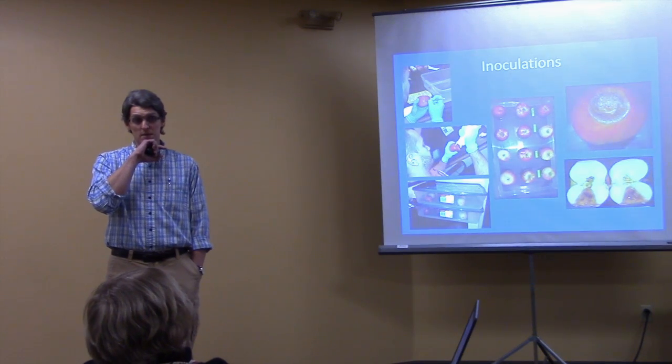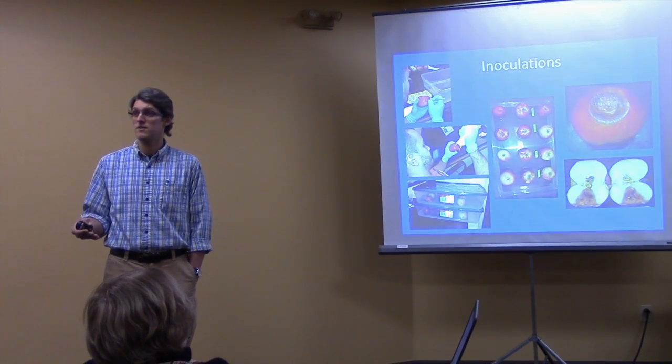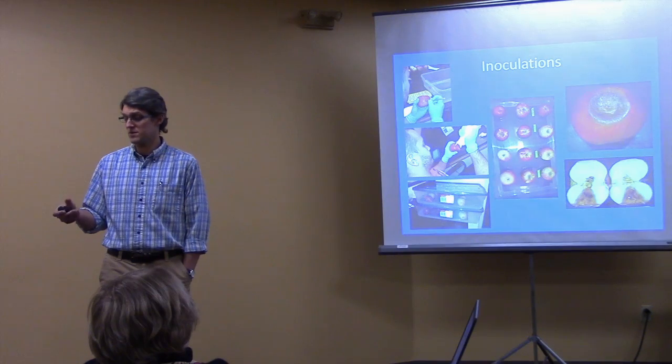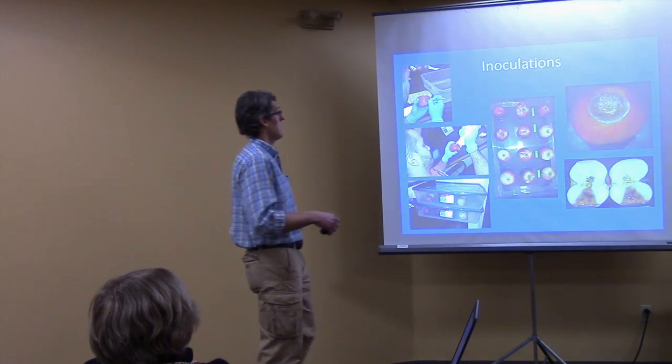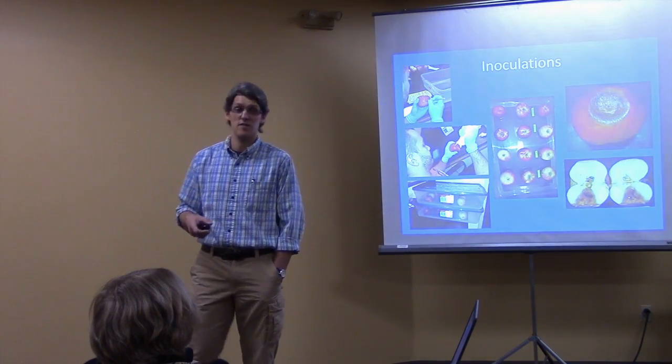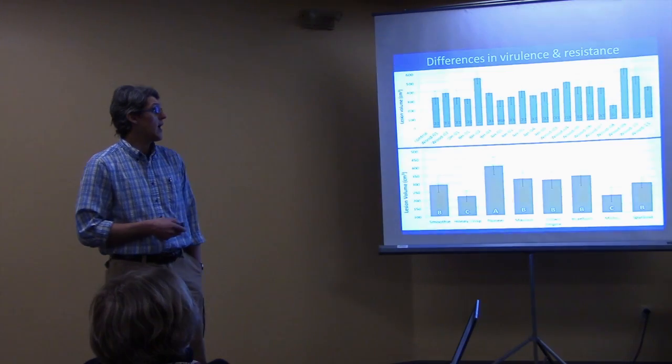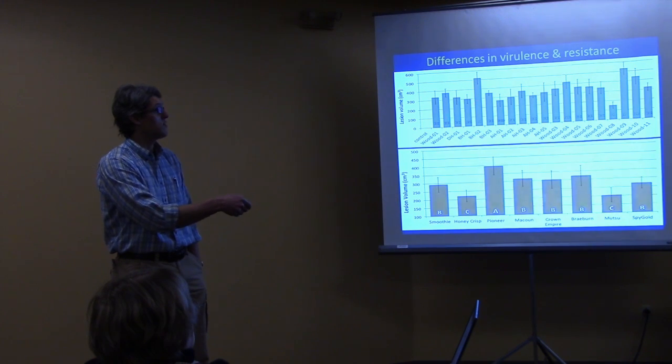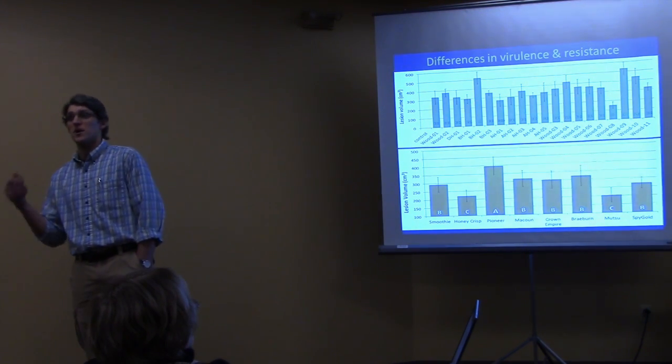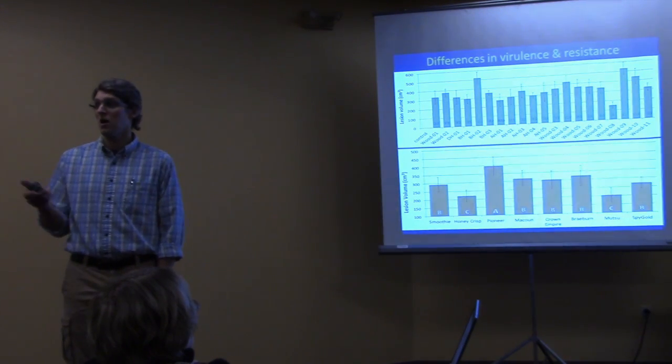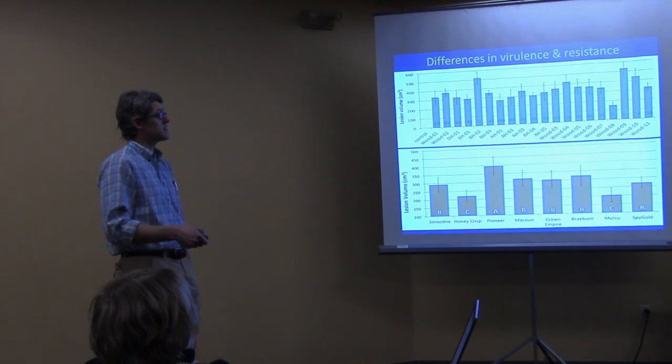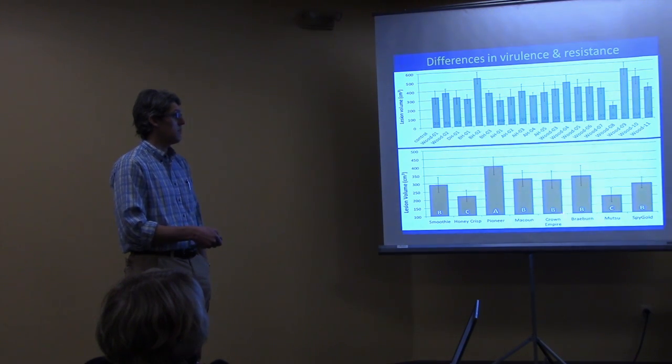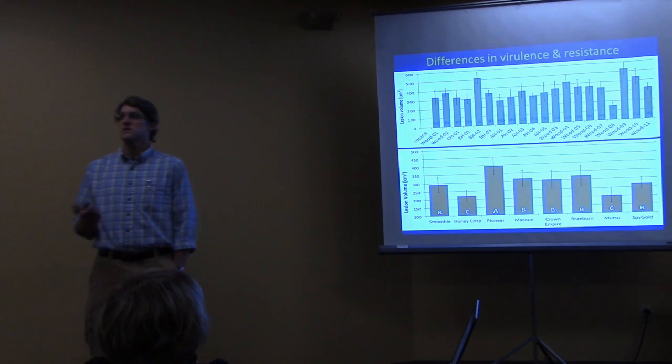We've done some inoculation experiments looking at virulence of these different strains of this pathogen, as well as potential resistance to some of our different apple cultivars. We just basically do a puncture wound and then we put the spores in there and we watch disease develop. What we found is there isn't a whole lot of difference in virulence between the strains. It looks like the strains, whether they're coming from fruit, whether they're coming from leaves, even the ones that are coming from cherry, are all pathogenic on our apples. What we did see is there is a difference in susceptibility where Pioneer Mac is the most susceptible and Mutsu and Honeycrisp appear to be slightly more resistant.